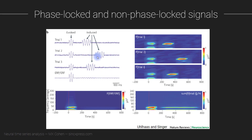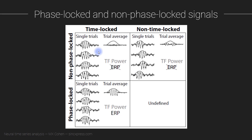I just want to very briefly remind you that we call a signal phase-locked if the exact timing and phase time series is the same on every trial, and therefore it survives trial averaging. We call a signal component non-phase-locked if the phase and/or exact timing is variable on different trials. Sometimes in the literature people call this evoked and induced, but I prefer the terms phase-locked and non-phase-locked — I think that's a bit closer to the assumptions we're making about the signal.